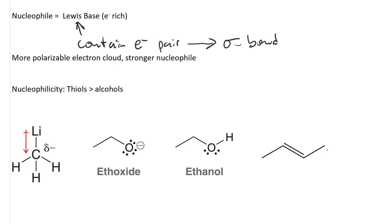In terms of nucleophile strength, the more polarizable the electron cloud, the stronger the nucleophile. Also, more negative charge gives you a stronger nucleophile. And we're just going to use the abbreviation nuke for nucleophile.